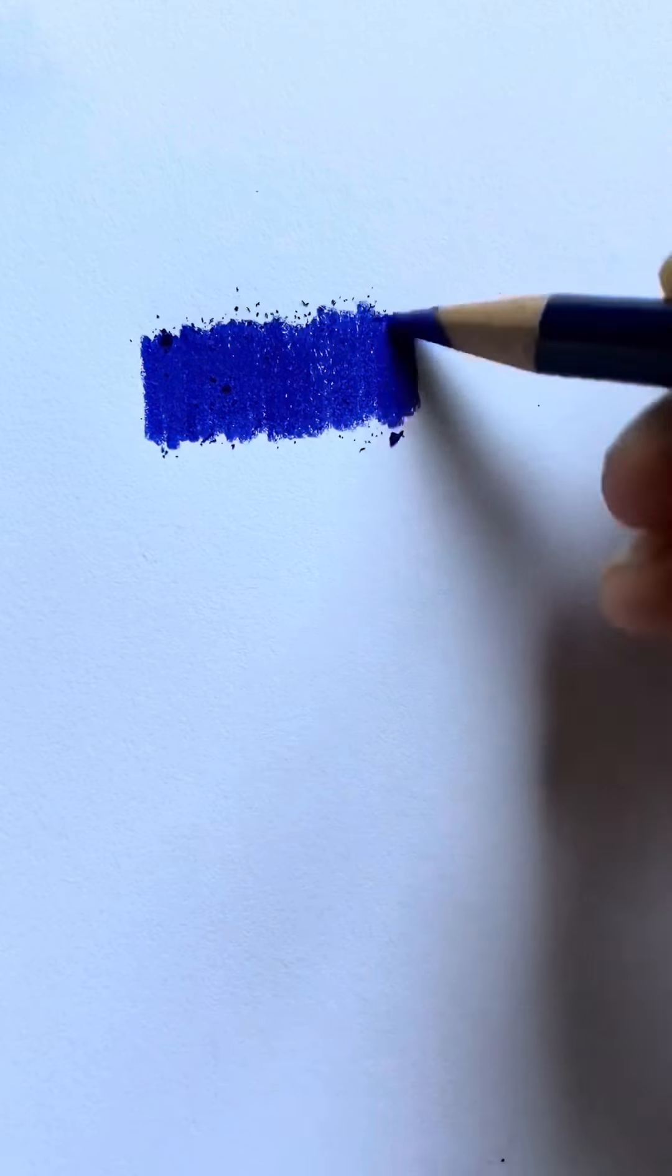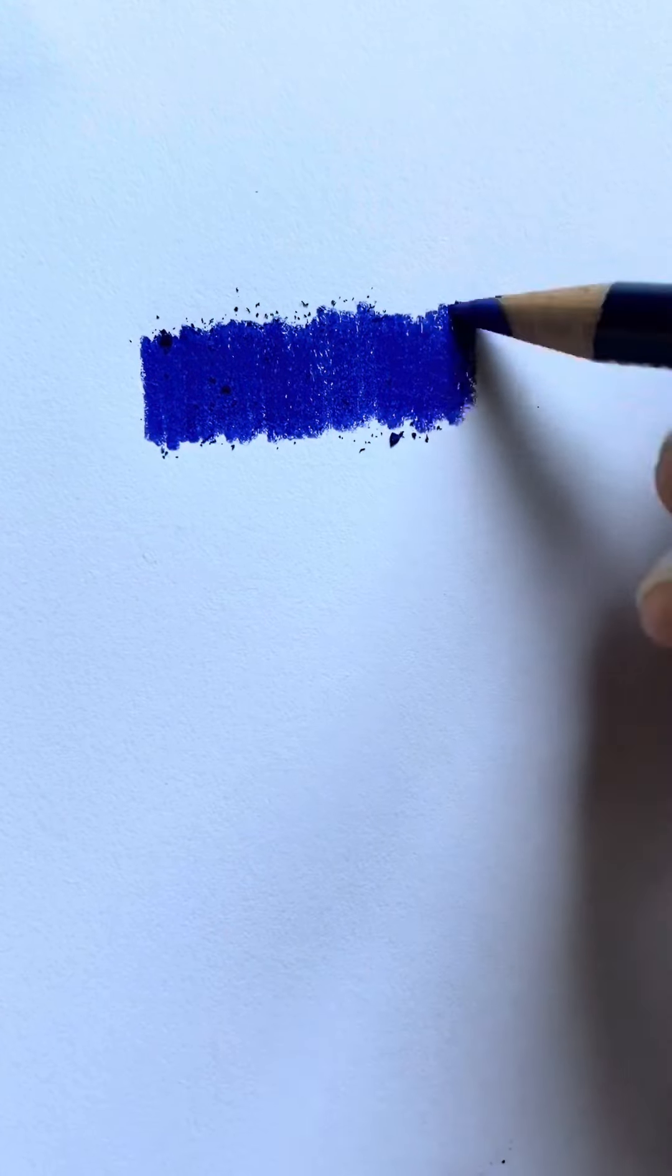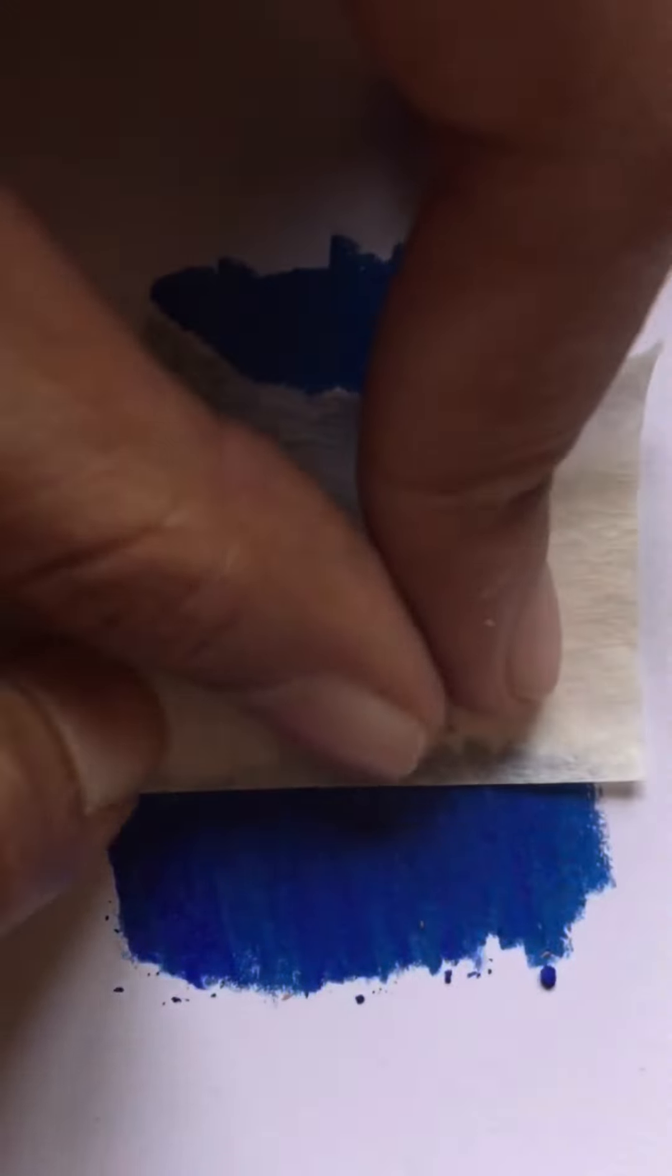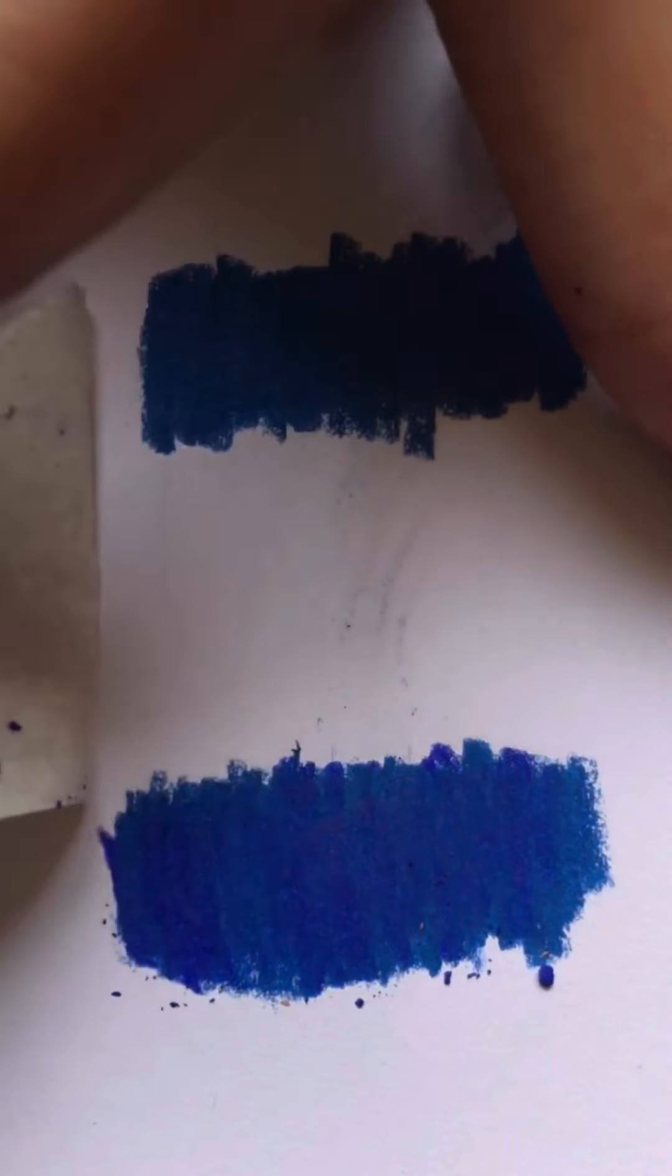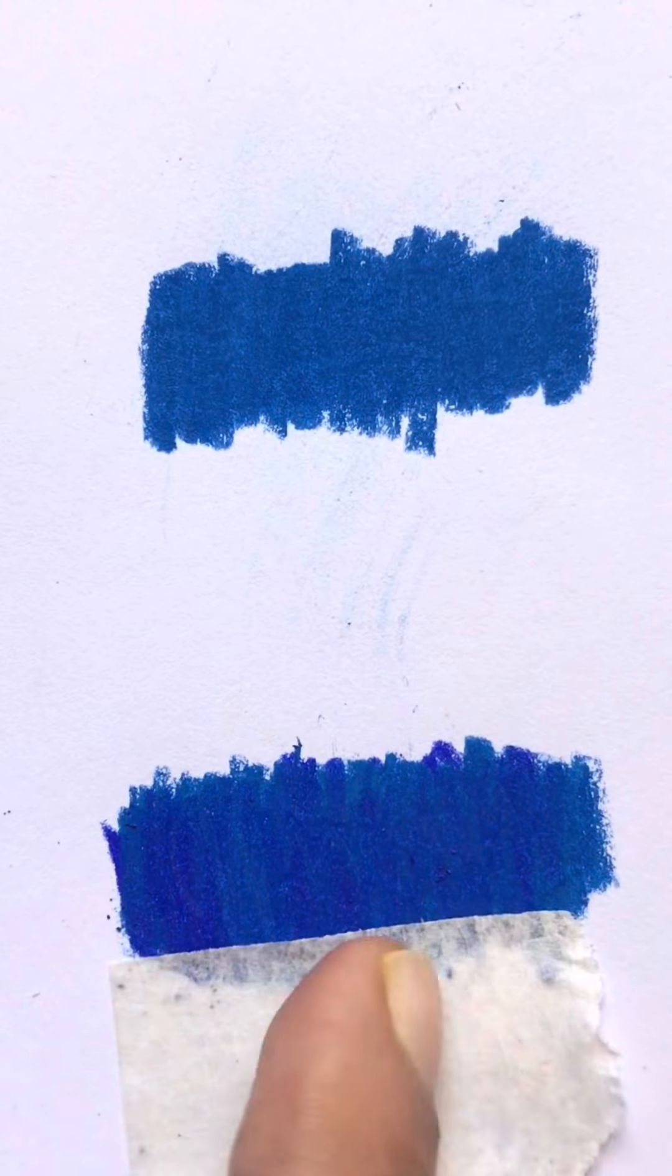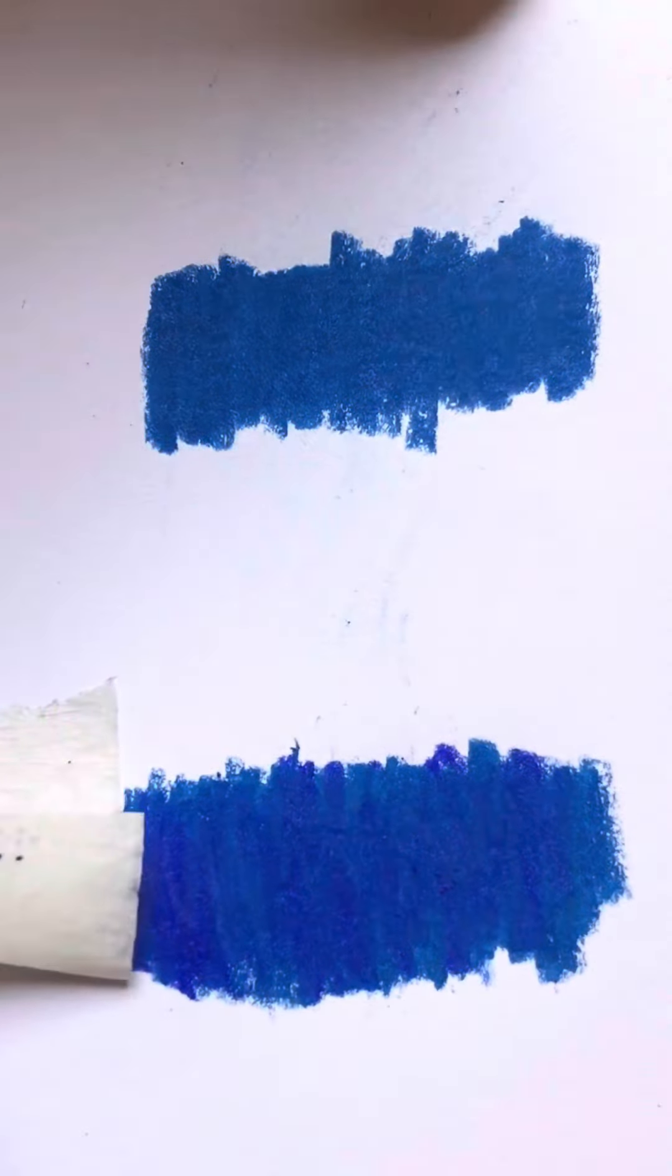Have you ever noticed that when you finish coloring, there are these small pieces of pencil around your drawing? Well, if you want to get rid of them without smudging them like this, then just use masking tape to pick up the pieces. Also, don't forget to use different sides of the masking tape to avoid smudging. This will leave you with a clean sheet of paper without any of those extra pieces. And that is it!